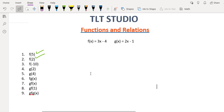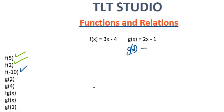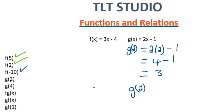Now we're going to take a look at the g function, which is g of x equal 2x minus 1. Here they're asking us to find g of 2. All you're doing is substituting the value of 2 anywhere you see x in the function. So we have g of 2 equal 2 multiplied by 2 minus 1. This is going to equal 4 minus 1, equal 3. So g of 2 equals 3.